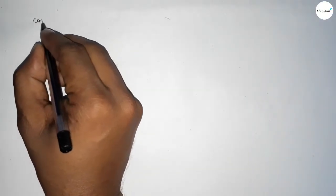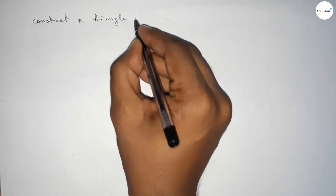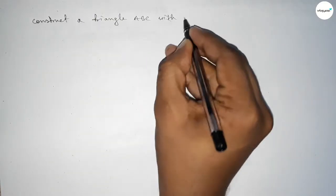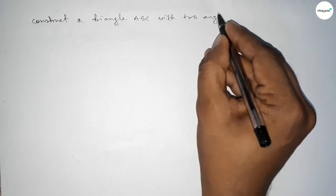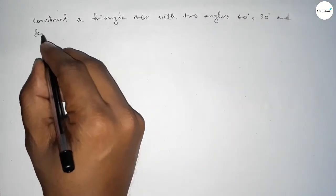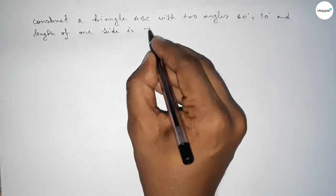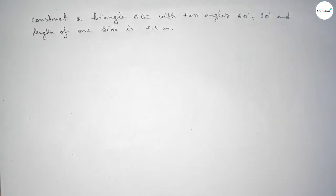Hi everyone, welcome to SI Share Classes. Today in this video we have to construct a triangle ABC with two given angles, 60 degrees and 30 degrees, and the length of one side of the triangle is 7.5 centimeters.